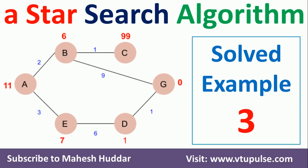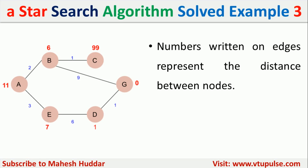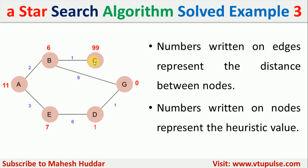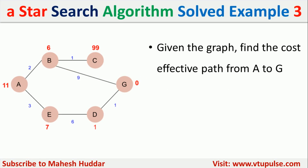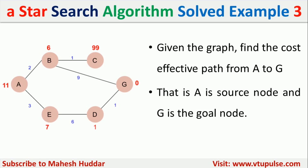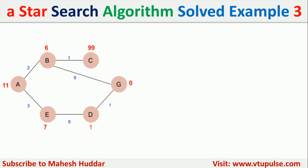Welcome back. In this video I will discuss how to apply the A* search algorithm to find a cost-effective path from a given source node to the goal node. This is solved example number three. The link for other solved examples as well as the source code is given in the description below. The numbers written on the edges represent the distance between the nodes, and the numbers written on the nodes represent the heuristic values. Given this particular graph, we have to find the cost-effective path from A to G.